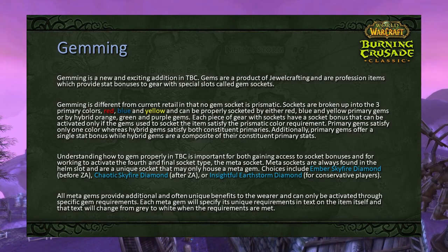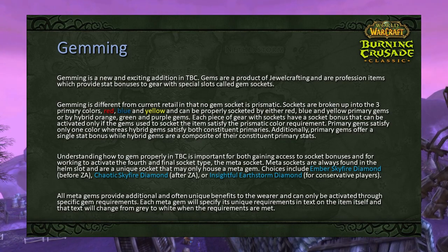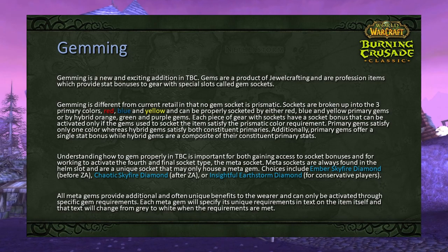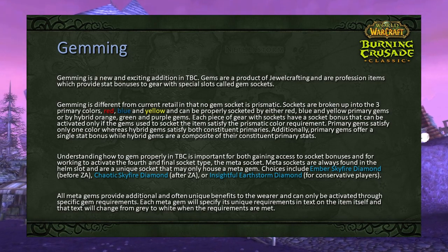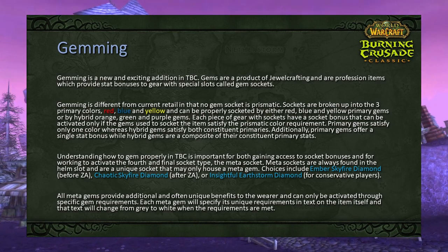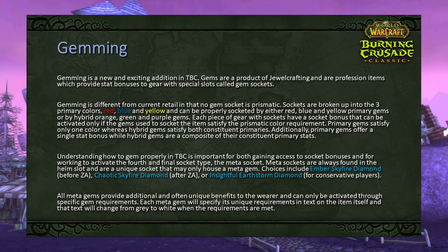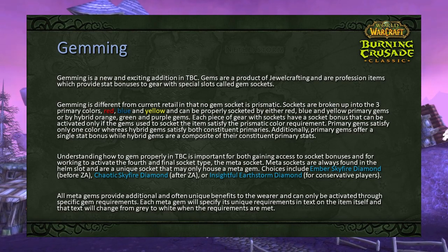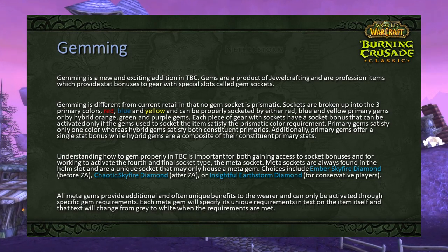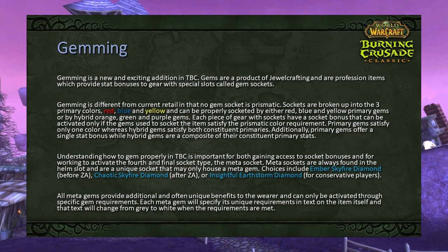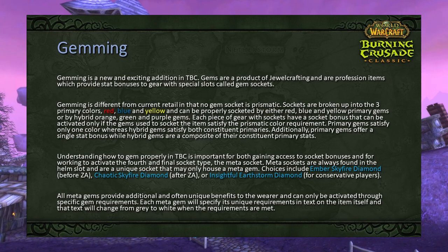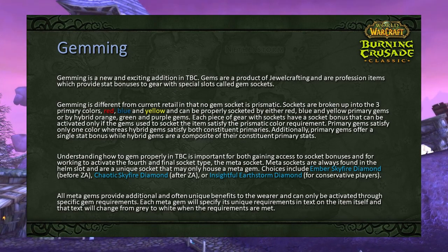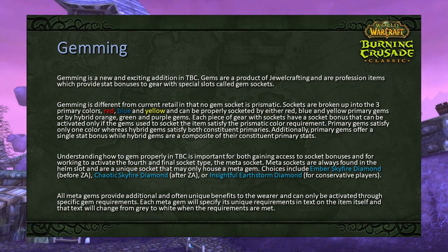In addition to enchanting, you improve gear through gems — a new addition in TBC from Jewelcrafting. Unlike retail, no gem socket is prismatic; sockets are red, blue, or yellow and can be filled by primary gems matching that color or hybrid gems satisfying two colors. Each gear piece with sockets has a socket bonus activated only if gems meet the prismatic color requirements. Primary gems satisfy one color and offer a single stat; hybrid gems satisfy two colors and offer two stats. Meta sockets, always found in helms, require a specific meta gem with its own activation requirements.